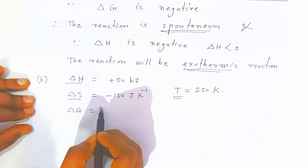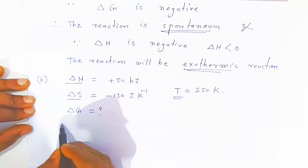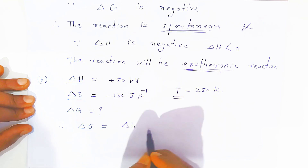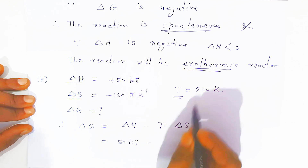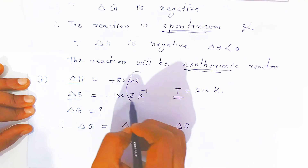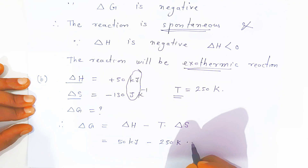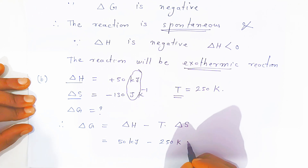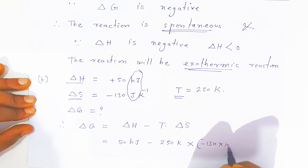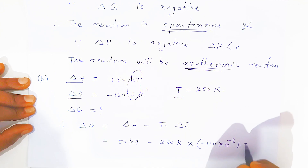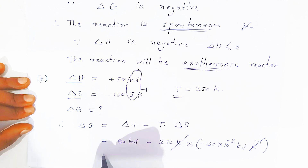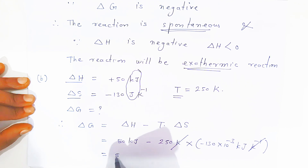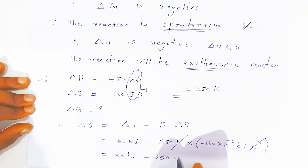Now how you will find whether the reaction will be spontaneous or non-spontaneous? For that you should know the change in Gibbs energy. You know the relation: ΔG is nothing but ΔH minus T ΔS. Put the value: 50 kilojoule minus temperature 250 kelvin — and here ΔS is in joule, so multiply by 10 raised to minus 3 — that is minus 130 into 10 raised to minus 3. It will convert into kilojoule per kelvin. The kelvin will cancel with kelvin inverse, and you get 50 kilojoule minus 250 into 0.130 kilojoule.